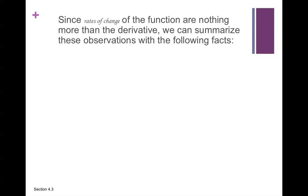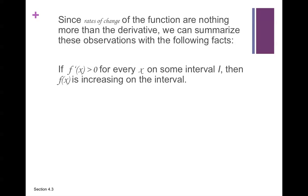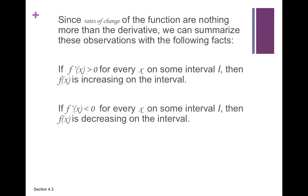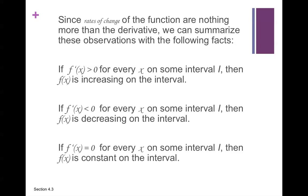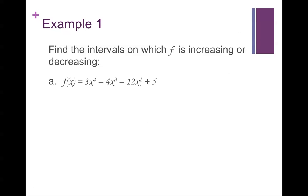Since rates of change of the function are nothing more than the derivative, we can summarize these observations with the following facts. If f prime of x is greater than zero for every x on some interval I, then f of x is increasing on the interval. If it is less than zero, then it is decreasing on the interval. And if it is equal to zero, then it is constant on the interval.